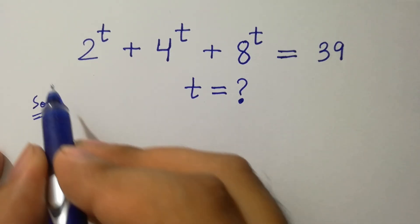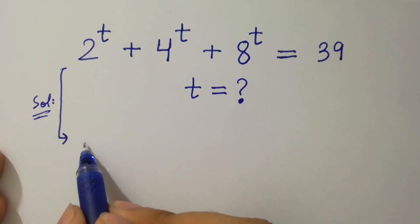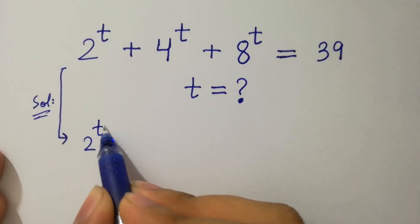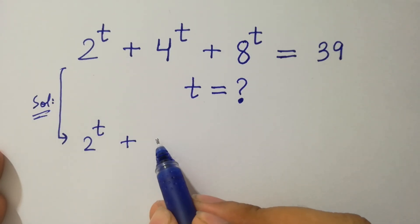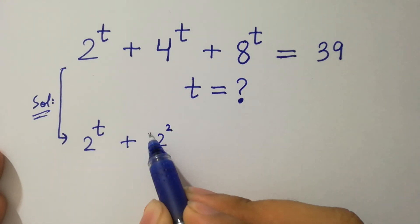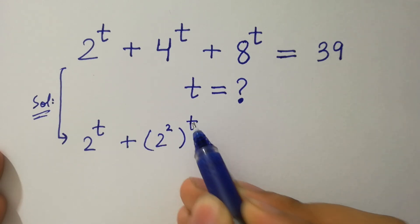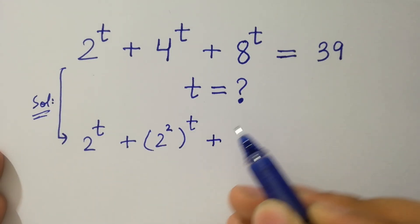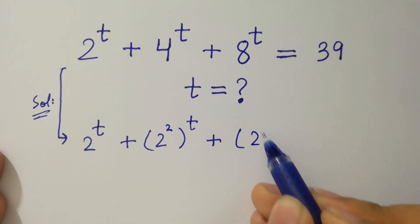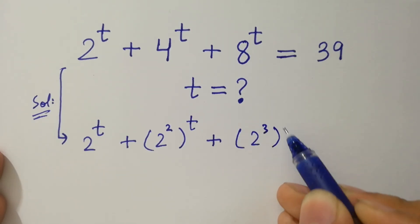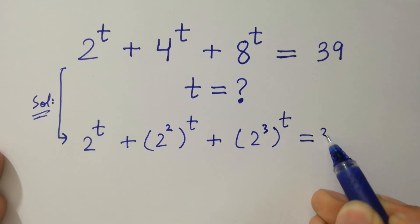So, we have here 2 to the power t, plus 4 to the power t — which is the same as 2 squared to the whole power t — plus 8 to the power t — which is the same as 2 cubed to the whole power t — equal to 39.